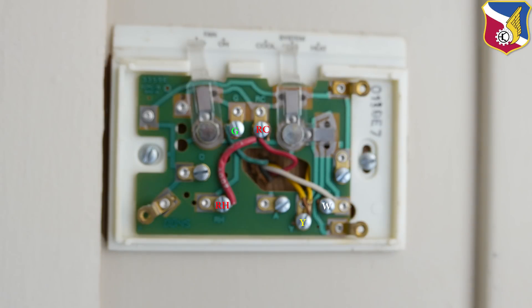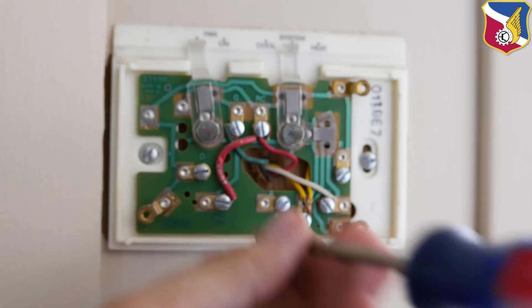The typical thermostat layout is red, white, green, and yellow, but sometimes these color wires don't match up. So to be safe, it's good practice to take a photo so that we can remember what color goes through which connector.